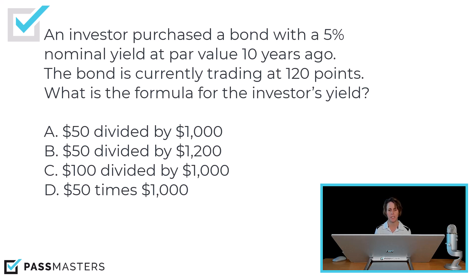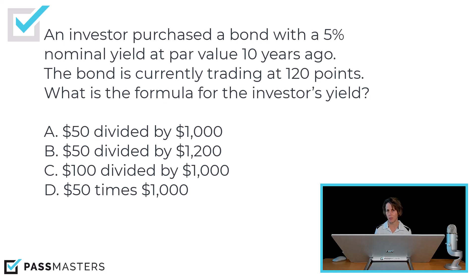So the investor's yield — what is the annual interest on this bond? 5% of par value is $50. So $50 divided by what they paid for the bond. After all, this question is for the investor's yield. It says they bought the bond at par value.